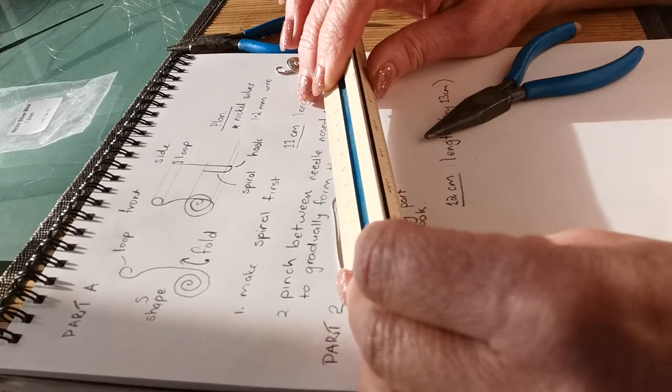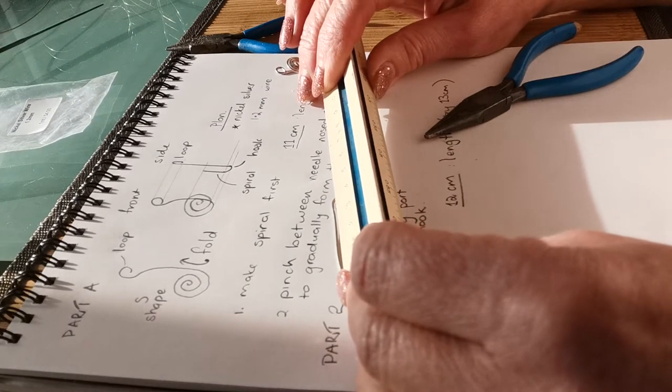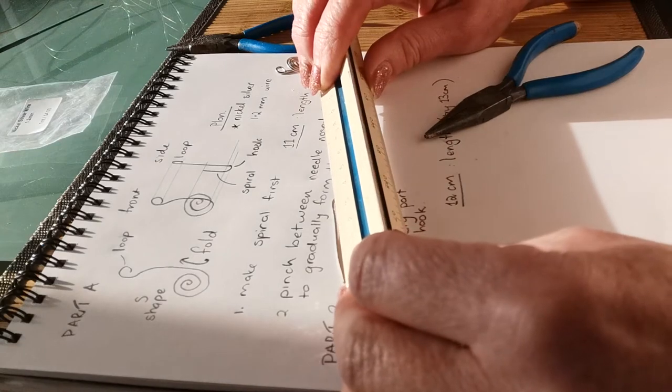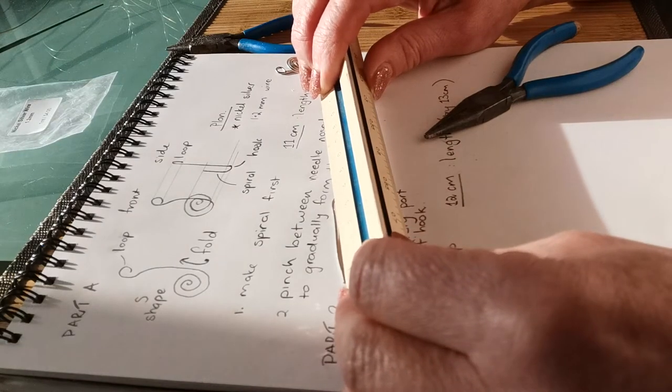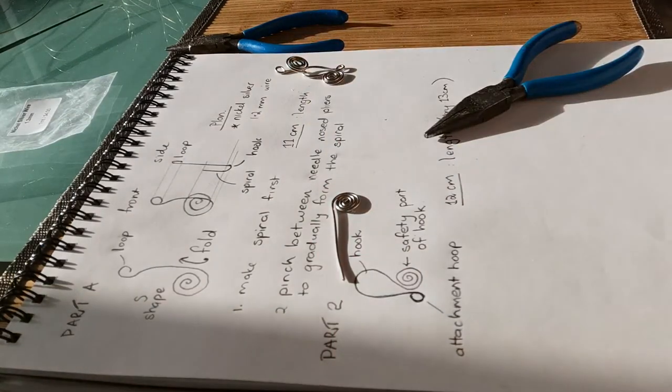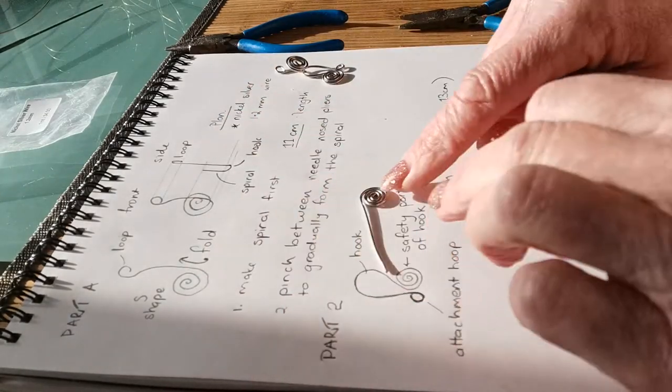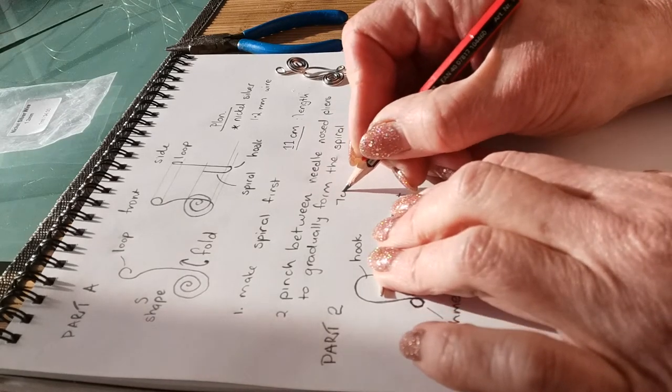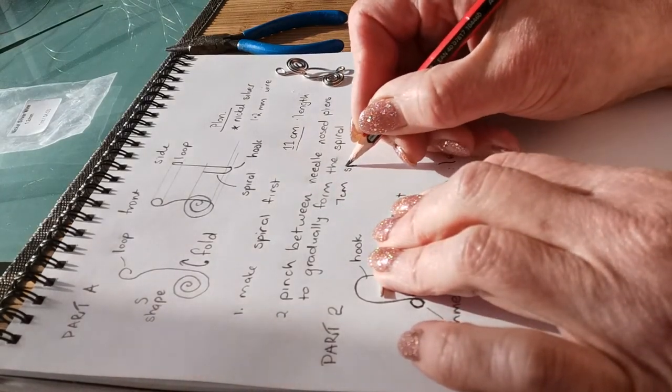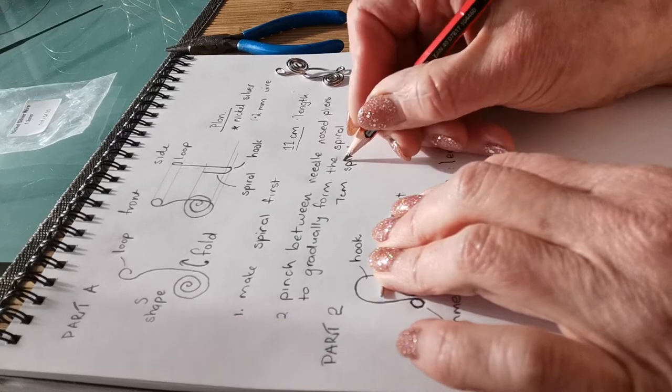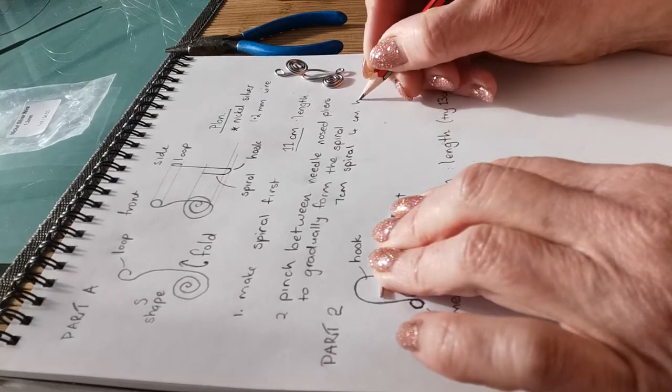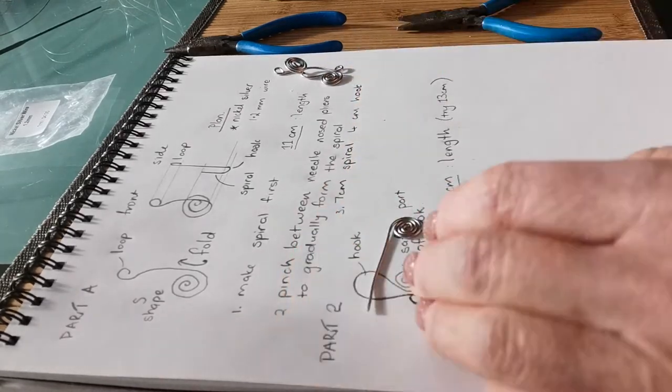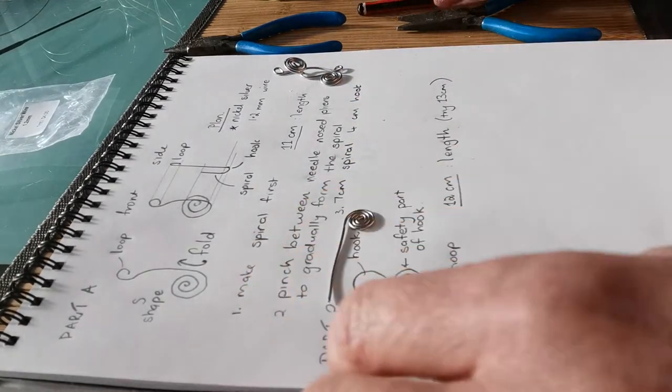I've left 4 centimeters for my hook part, so that would be 7 centimeters of spiral. I could write that down: 7 centimeters spiral, 4 centimeters hook. As you build up your skills, you record a little bit more about it.